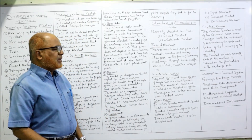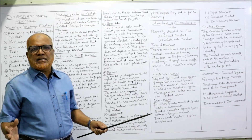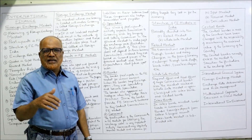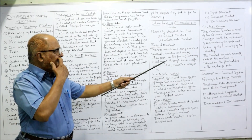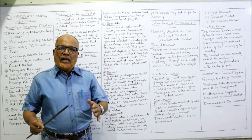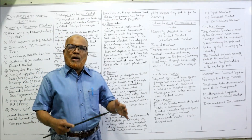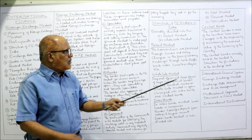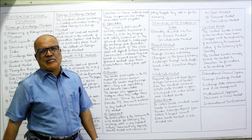The structure of the foreign exchange market in India consists of two broad categories: the retail market and the wholesale market. In the retail market, transactions are processed through banks and money changers in the form of currency exchanges, bank drafts, bank notes, or traveler's checks. It is a direct market between a bank and a customer, or a money changer and a customer, to settle their foreign exchange requirements.